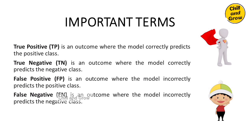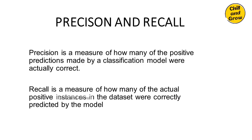Now let's look at the next metrics: Precision and Recall. Precision is when the model predicts a positive result — how many of those predictions are actually correct. Recall is about how many actual positive cases the model correctly identifies. Precision means being correct in your positive predictions; recall means capturing all actual positives.